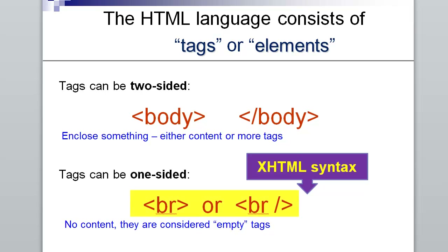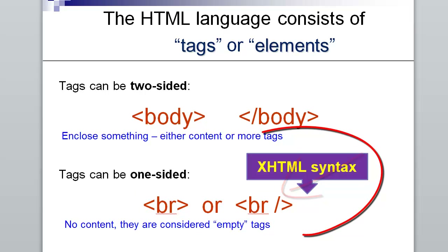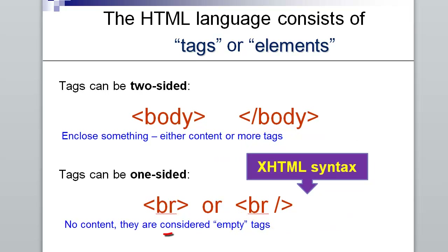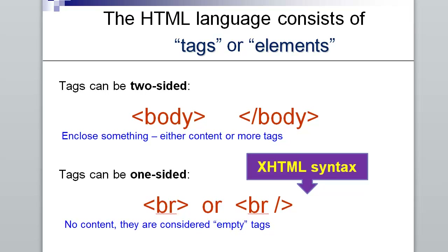Notice the two different ways the break tag can be written. One has the forward slash to the right of the tag name — that is the traditional XHTML syntax, which required terminating one-sided tags. HTML5, however, goes back to the original one-sided tag without the forward slash at the end. Whichever syntax you choose to use for this class is fine. We're not going to be using XHTML in the future, so you will see it written both ways on other pages depending on which version of HTML they are using.